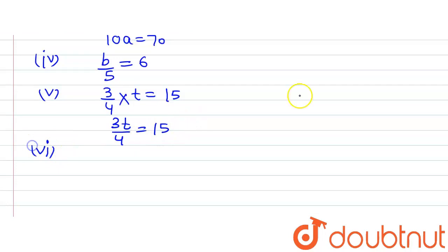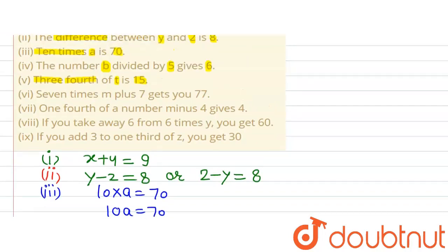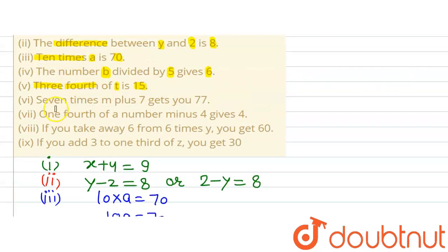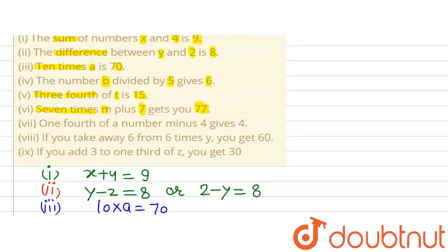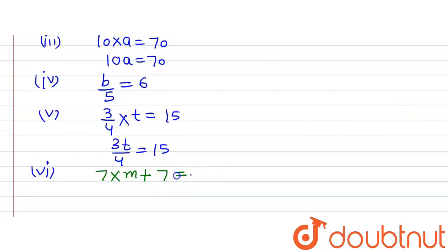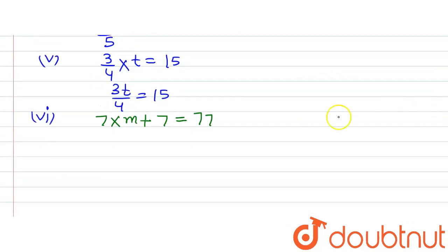In the sixth part, 7 times m plus 7 gets you 77. Writing it in equation form: 7 multiplied by m, plus 7, equals 77. So 7m + 7 = 77 is the equation representing the sixth part of the question.